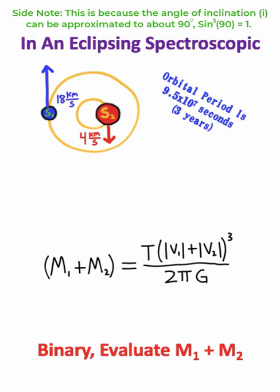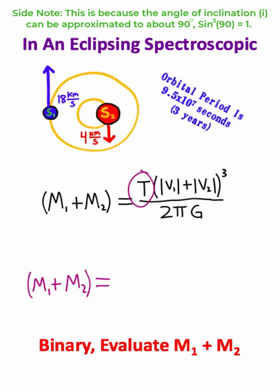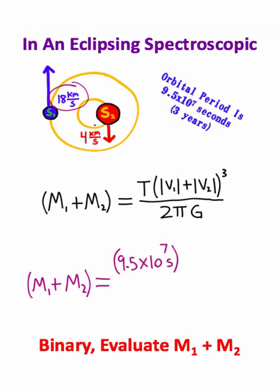So to calculate the sum of the two masses of the stars, I'm going to start by plugging in the orbital period, which is 9.5 times 10 to the 7 seconds, or about 3 years. Star 1's velocity is 18 kilometers per second, and star 2's velocity is 4 kilometers per second.